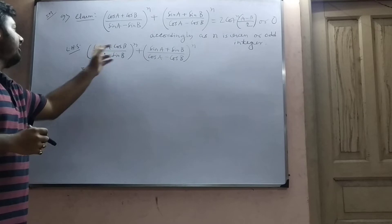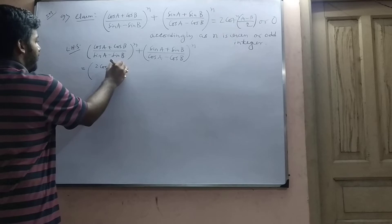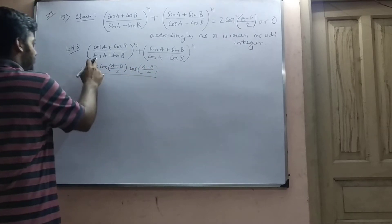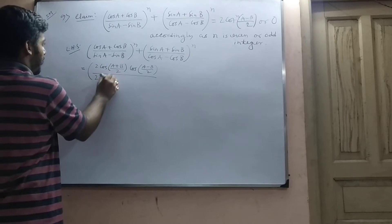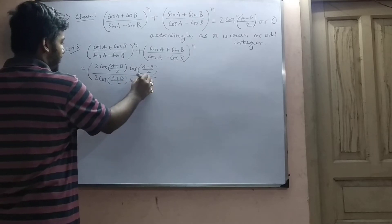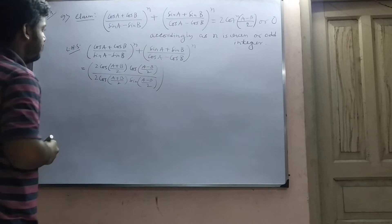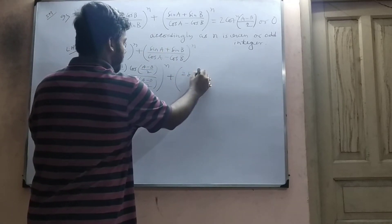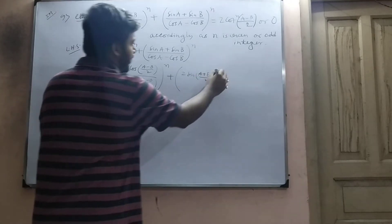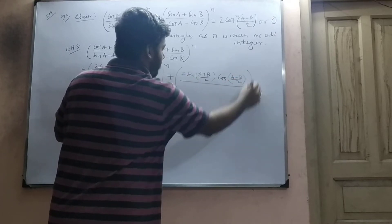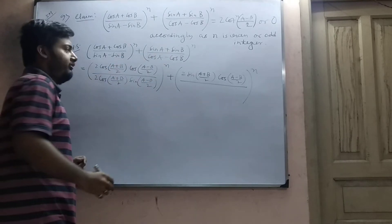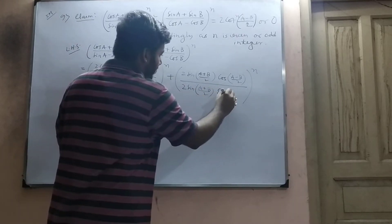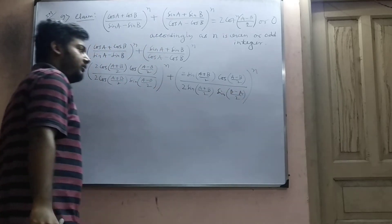First, use the cos C plus cos D formula: that is 2·cos((C+D)/2)·cos((C−D)/2). By using the sin C minus sin D formula: 2·cos((C+D)/2)·sin((C−D)/2). And the cos C minus cos D formula gives 2·cos((C+D)/2)·cos((C+D)/2). These are very important formulas.